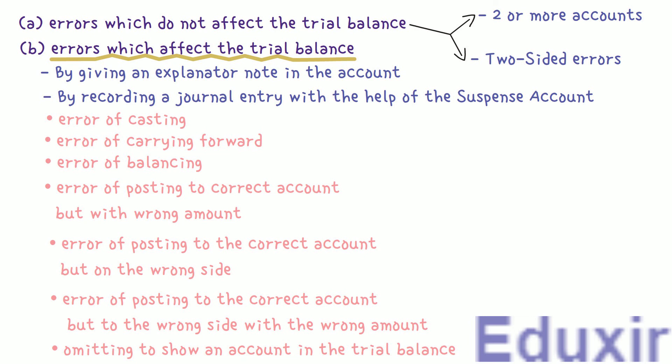In a real situation, there can be many one-sided errors which cause a difference in trial balance. To rectify these errors, we need to open a suspense account. When the trial balance is not in agreement and if there are so many one-sided errors, it is not possible to rectify all the errors. So we open a suspense account and make the total of debit and credit columns equal and proceed with the accounting process. When these errors are located at a later point of time and the specific accounts and amounts involved are identified, the amounts from the suspense account are transferred to the relevant accounts and then the suspense account is closed.